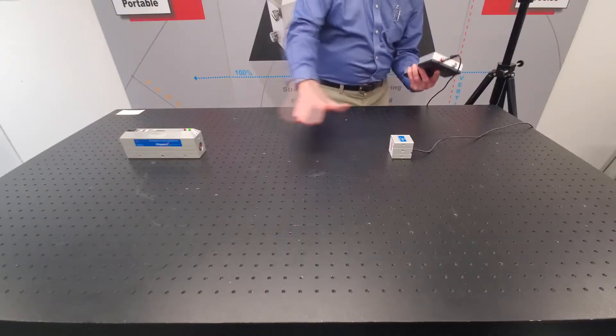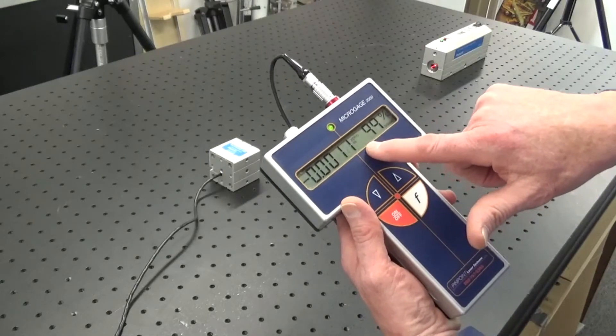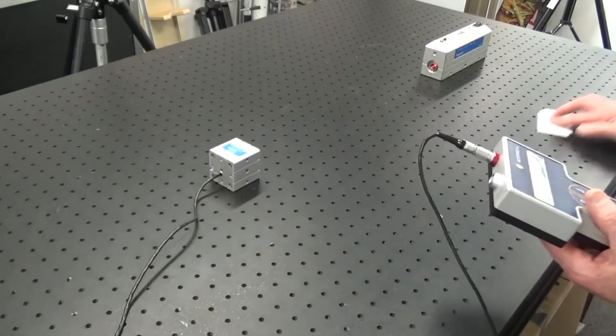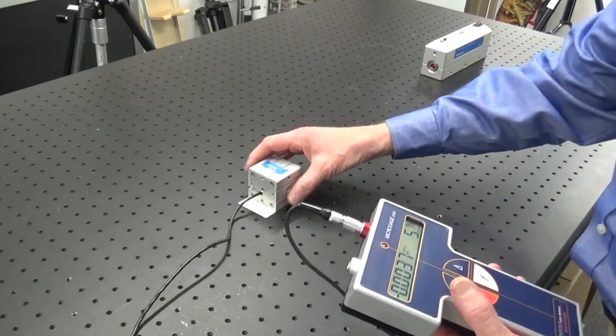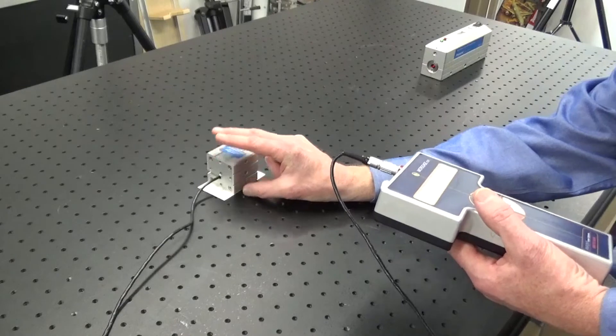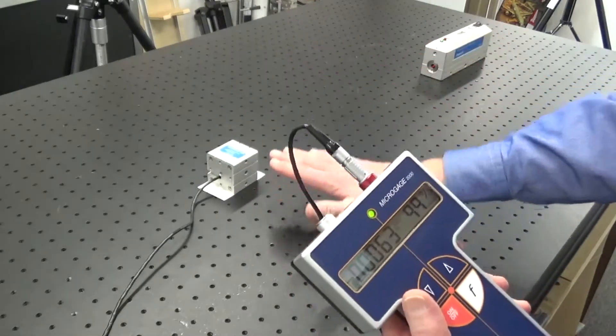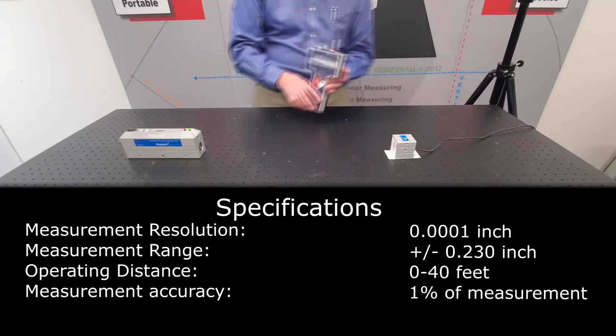With the laser and the receiver sitting on the same surface, we can see the reading is close to zero. If we now elevate the receiver, and I'm doing this with a simple business card, you can see that the reading on the display has changed because the receiver has moved up.